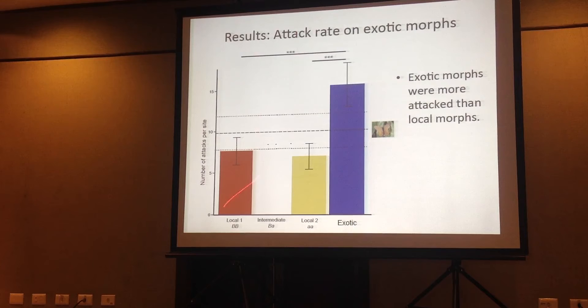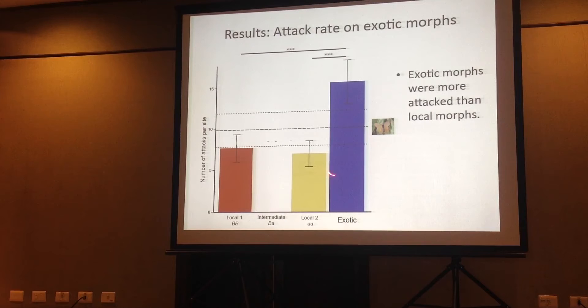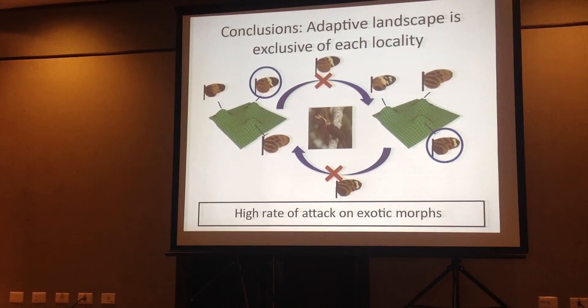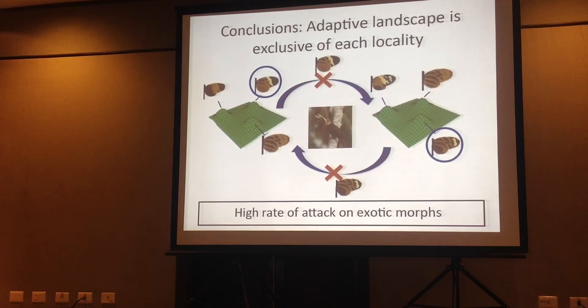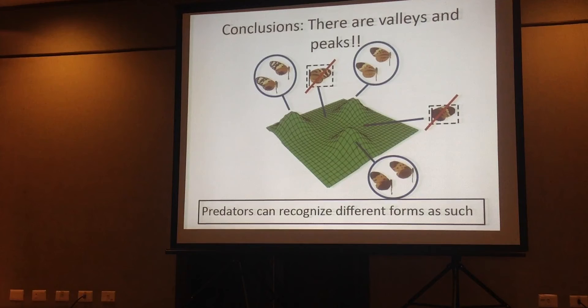Here are the numbers of attacks per site and the different morphs — here are all localities pooled together. First, we found that the exotic ones were significantly more attacked than the two locals. This emphasizes how important predator pressure is in maintaining the heterogeneous spatial distribution of Heliconius butterflies — not allowing morphs that are not present in some localities to spread to others. On top of that, we found that the intermediate morphs were more attacked than the two local morphs.